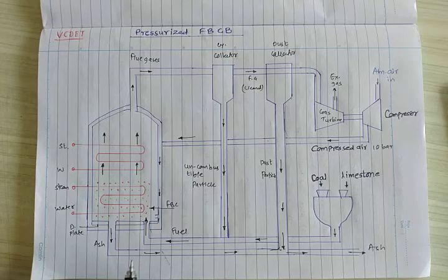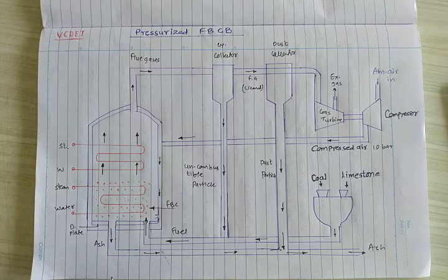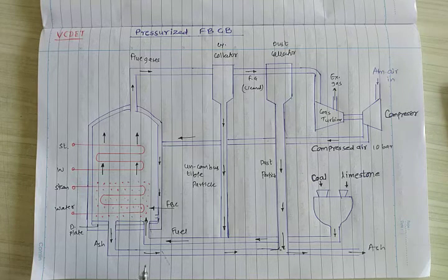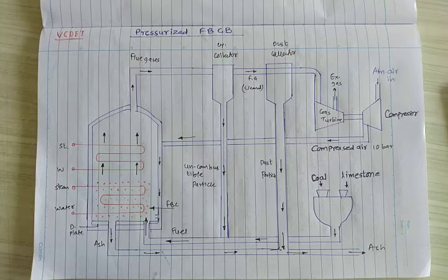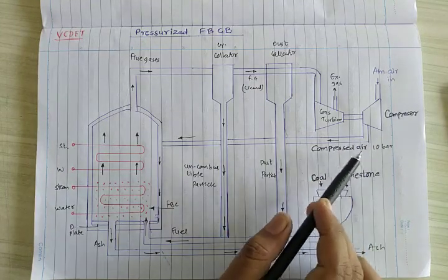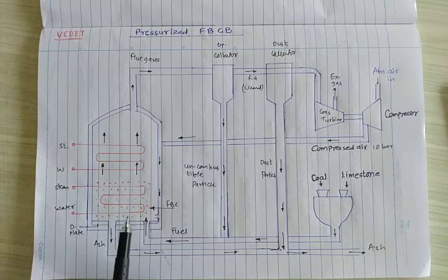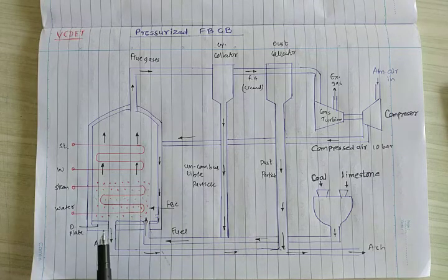The difference between the pressurized fluidized bed combustion and the circulating fluidized bed combustion is that in circulating FBC the operation is done at atmospheric pressure. Here in the PFBC, the air is supplied under pressure of 10 bar. For that purpose we use a compressor which compresses the air to 10 bar and then sends it towards the combustion chamber.